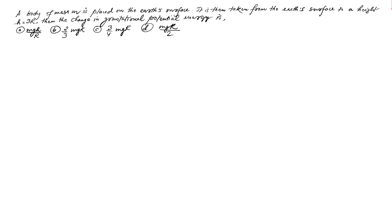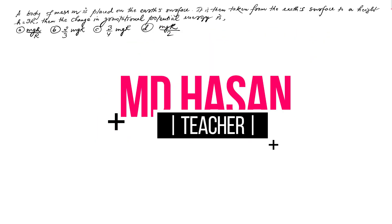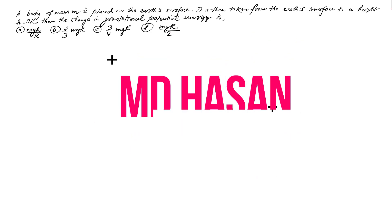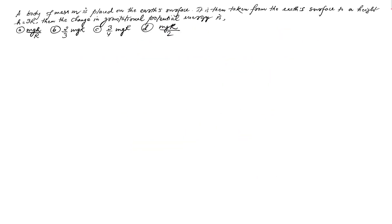Hello everyone, welcome to Knit Physics. Today we'll be looking into a concept by which we can solve some questions very quickly. Look at this question: a body of mass m is placed on the Earth's surface, and it is then taken from the Earth's surface to a height h equal to 3R.